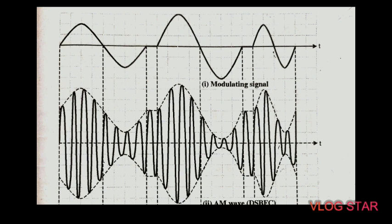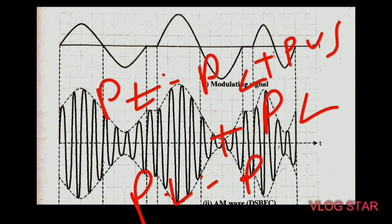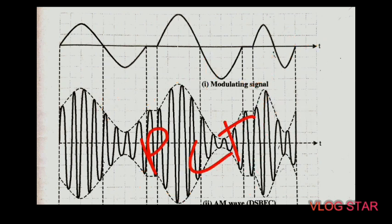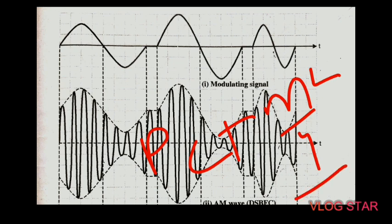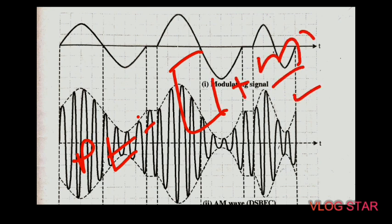The total power transmitted by an AM wave is given by P(T) = PC + P_USB + P_LSB, where the power of the USB is equal to (M² / 4) × PC, and similarly for the lower sideband. The carrier component does not contain any information and one sideband is redundant. The total power is P(T) = [1 + (M² / 2)] × PC.